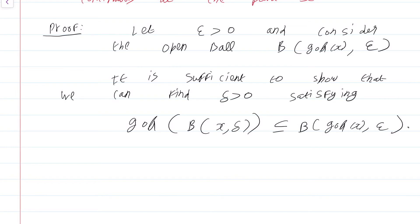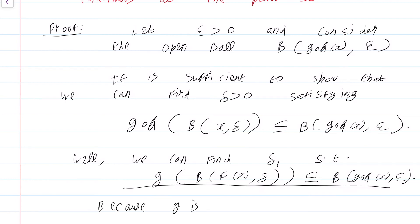How does one do this? Well, we can find delta_1 such that g(B(f(x), δ₁)) is a subset of B(g∘f(x), ε). Why can we do this? Because g is continuous at f(x).